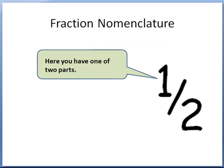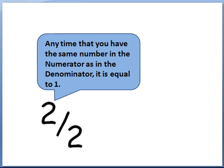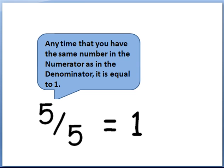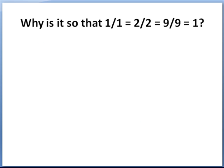Here we have 1 of 2 parts, and here we have 2 of 2 parts. Any time that you have the same number in the numerator as in the denominator, it is equal to 1. So, 2 over 2 is equal to 1. 5 over 5, or 5 fifths, is equal to 1. 9 ninths is equal to 1. X over X is equal to 1.